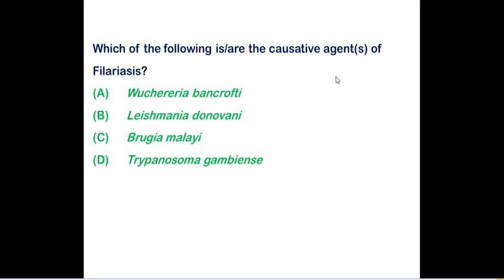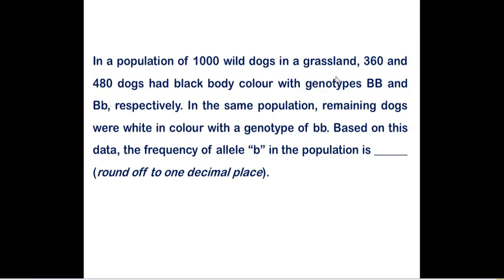Option A is correct and option C is also correct. It is a multiple select question. Option B is incorrect because Leishmania donovani is responsible for causing leishmaniasis and Trypanosoma gambiense is a protozoan which is responsible for causing sleeping sickness disease.